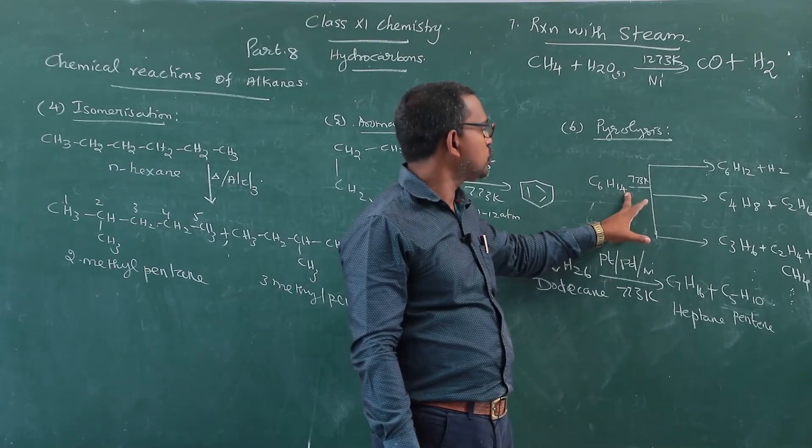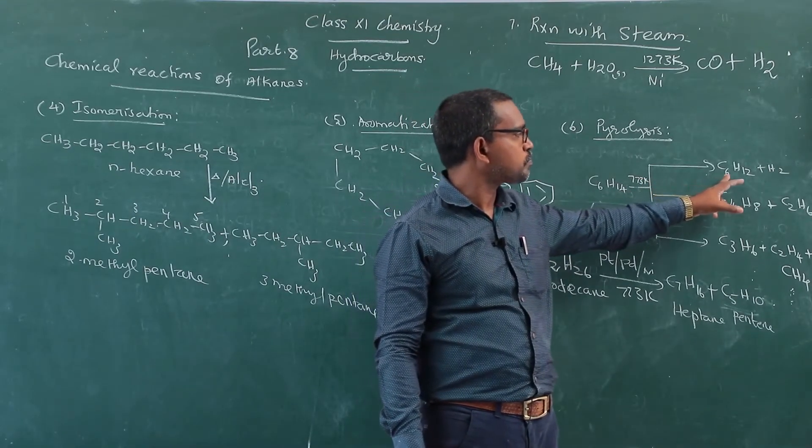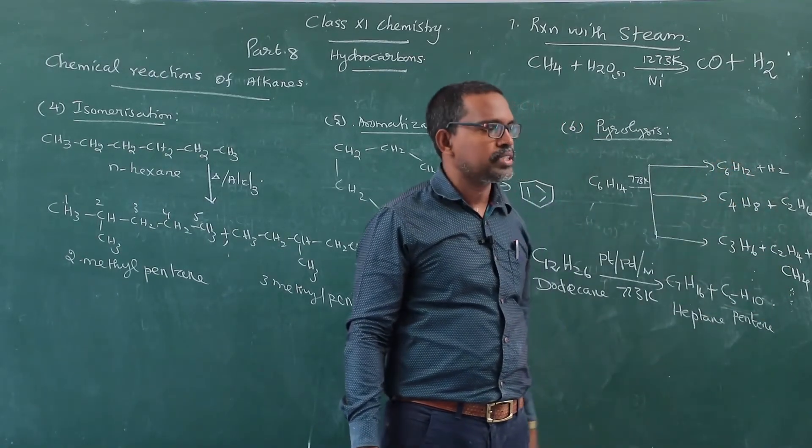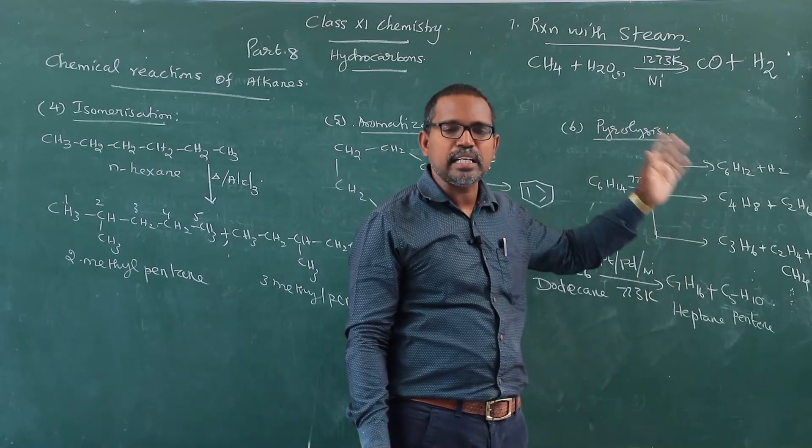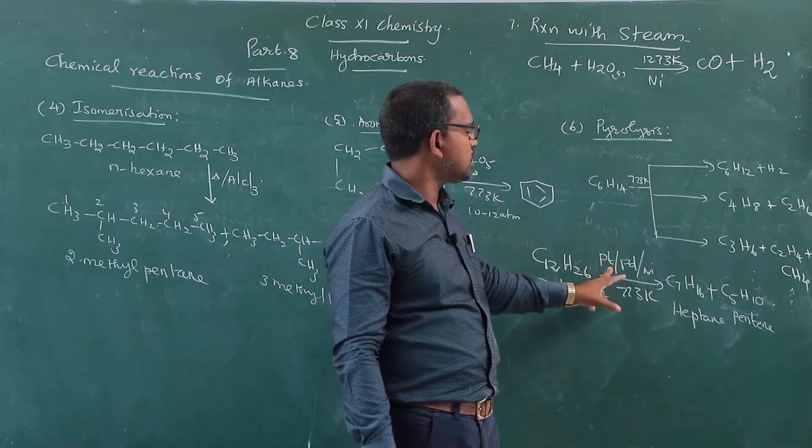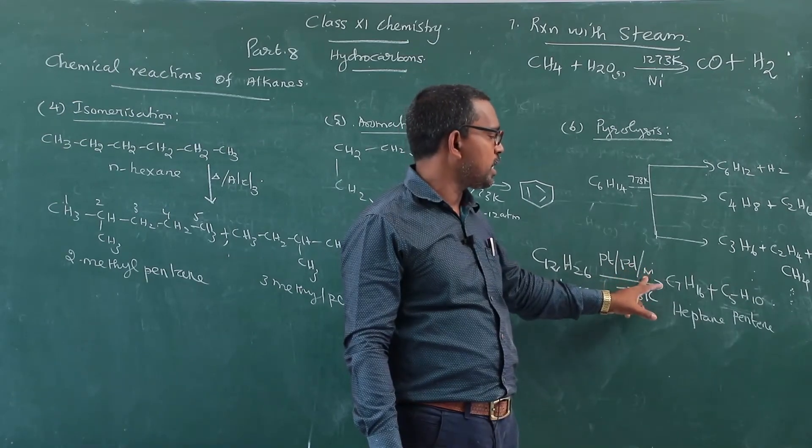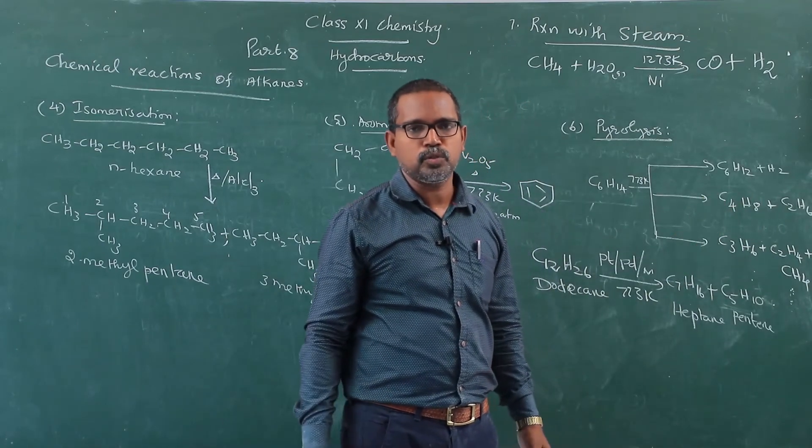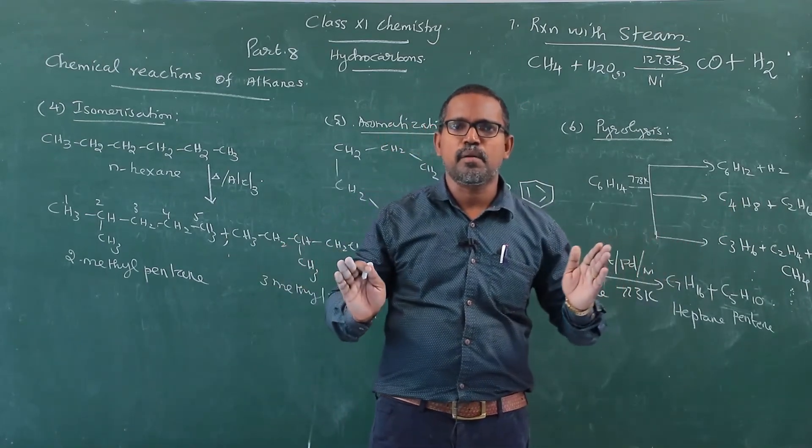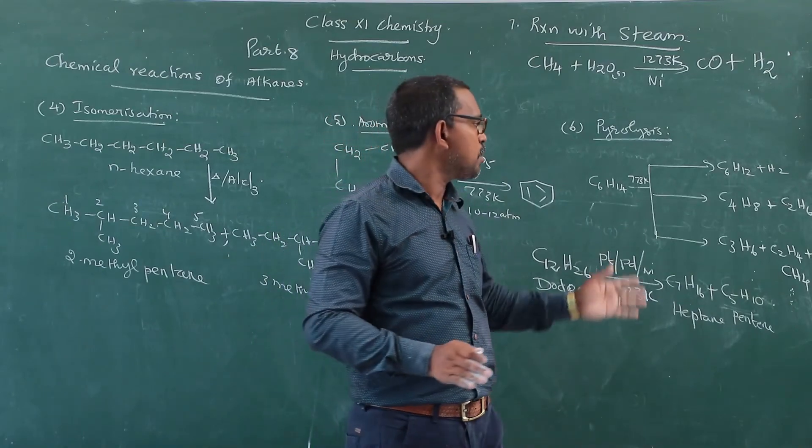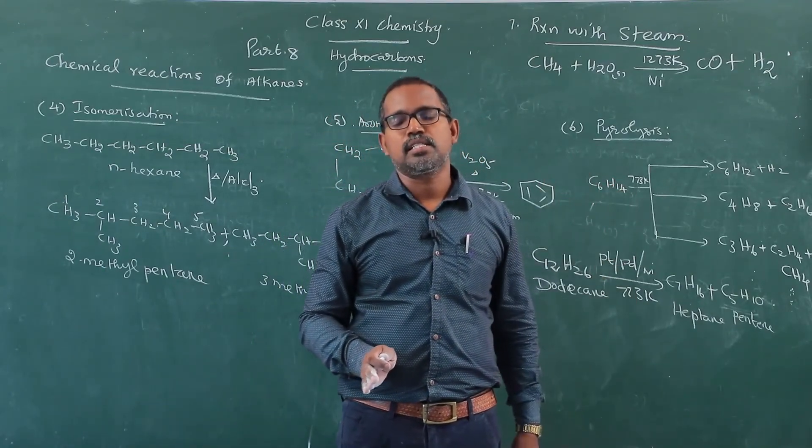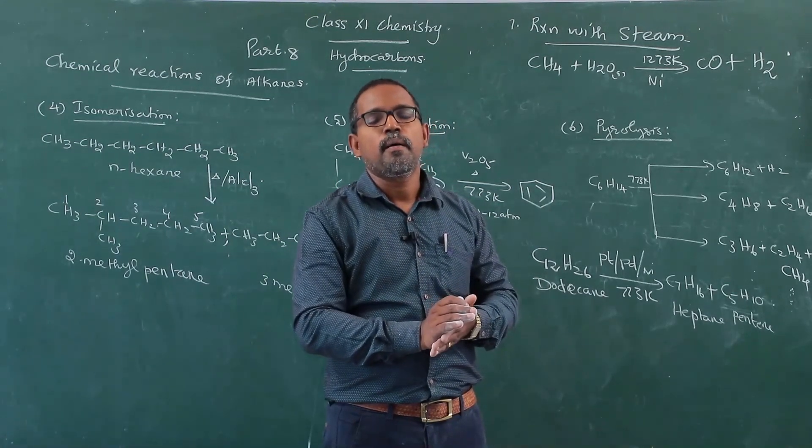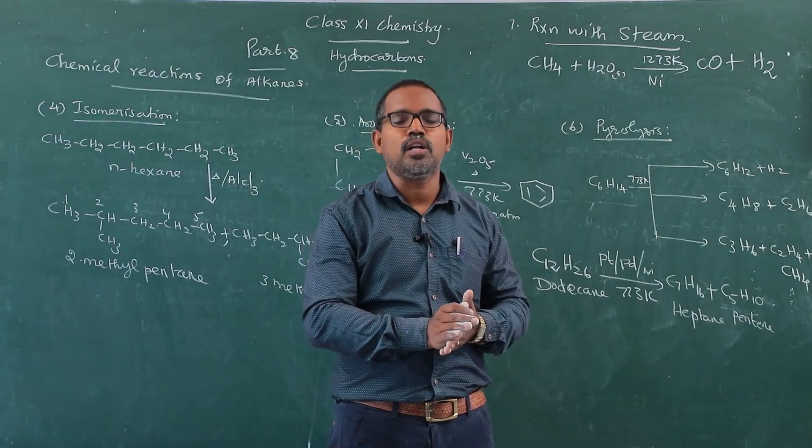Here, normal hexane, C6H14 gives alkenes. Alkenes as well as alkanes as the product. A mixture of alkenes and alkanes as the product. And dodecane is heated in the presence of platinum or palladium or nickel gives heptane, pentene and other products are formed. So, heavier alkanes are broken down into smaller alkanes in the presence of metallic oxide or metals as the catalyst to form lower alkanes. The process is called cracking, generally known as pyrolysis.